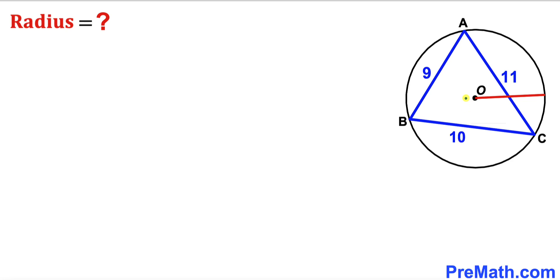Welcome to pre-math. In this video we have got this blue triangle ABC fully inscribed in a circle with the center O, as you can see in this diagram, such that the side lengths of this triangle are 9, 10, and 11 units. Our task is to find the radius of this circle.